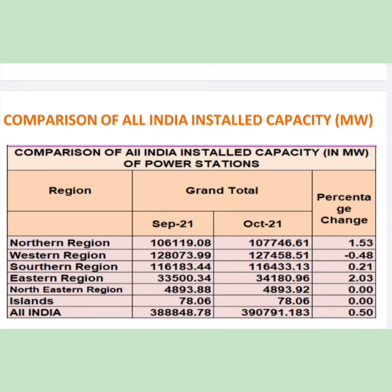Now it's time to do the comparison with last month, September 2021. If you look at the table, the total change is around 0.5%, and this is on the positive side with respect to September 2021. The maximum contribution to that change is given by the eastern region at 2.03% and the northern region at 1.53%, whereas for the western region it is on the negative side at minus 0.48%, and for the northeastern region and islands there is no change at all.